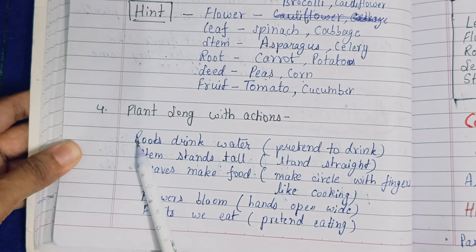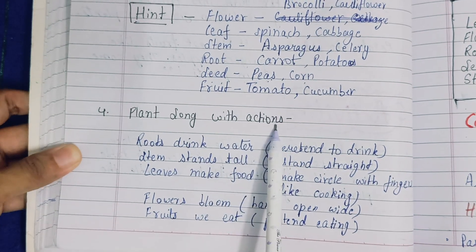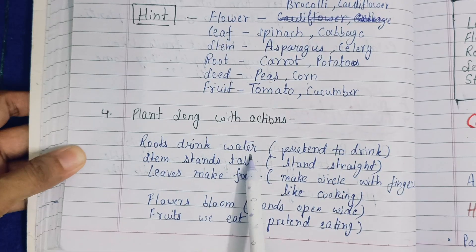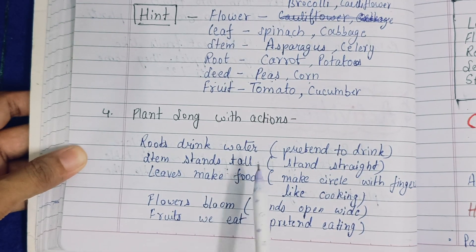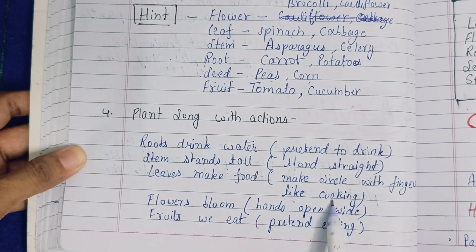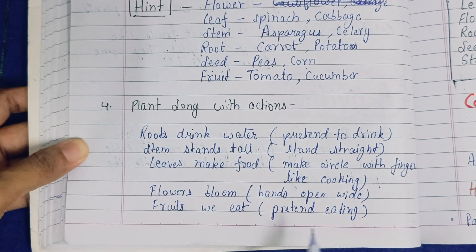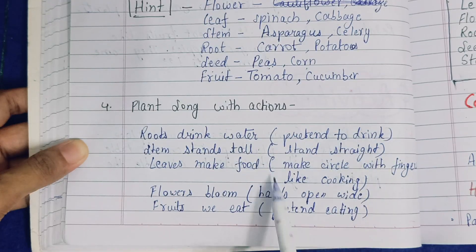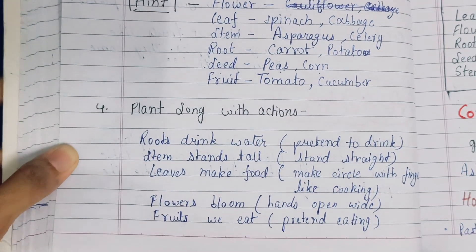Next, sing a song with actions: roots drink water — pretend to drink; stem stands tall — stand straight; leaves make food — make a circle with fingers like cooking; flowers bloom — hands open wide; fruits we eat — pretend eating. These are the actions to do with the song.